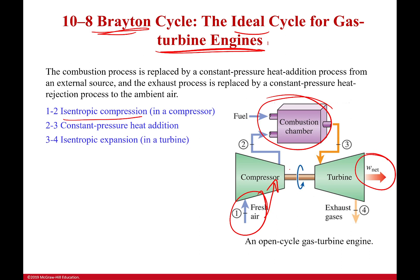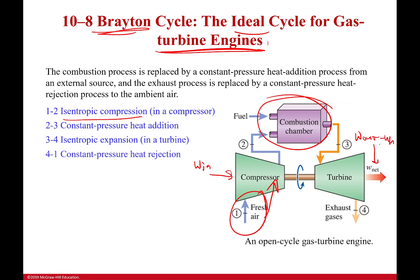As a note, you see it says work net. That's because it takes work to make the compressor run. So what I have is work out from the turbine, which is more, minus work in — that is what the work net is equal to. Finally, I have the exhaust gases which are leaving, but we're pretending those don't actually leave, and it's just constant pressure heat rejection.